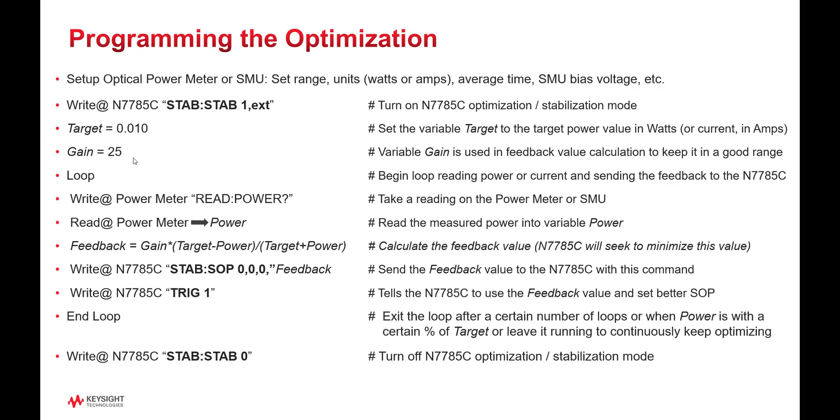The next is the gain value. Gain is used to scale the feedback value to a reasonable size. Good values for the algorithm are between 1 and about 10 or 20. You don't want it too large or too small, and it may take a little trial and error to find the right gain value for your device.